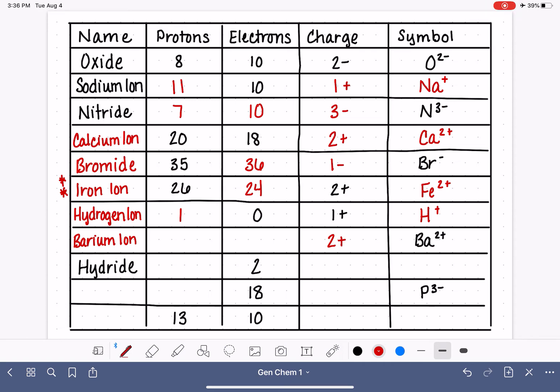56 protons. 56 protons. And with a plus 2 charge, that tells us that we have 2 more protons than we have electrons. Our next example, hydride, with 2 electrons. Hydride tells us that this is a negatively charged particle.